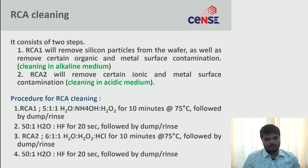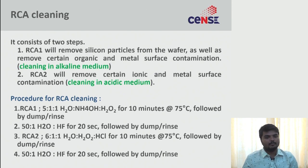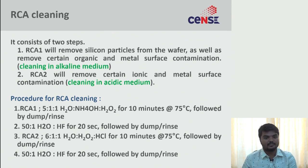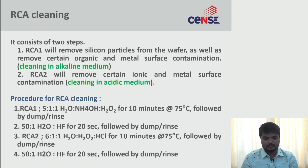Chemical ratios: RCA1 uses 5:1:1 — five parts DI water, one part ammonium hydroxide, one part hydrogen peroxide. RCA2 uses 6:1:1 — six parts DI water, one part hydrogen peroxide, one part HCl. RCA1 uses ammonium hydroxide as a strong base; RCA2 uses HCl as acid. Inorganic oxides are highly selective to acids but dissolve easily in strong bases like ammonium hydroxide.